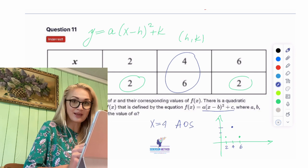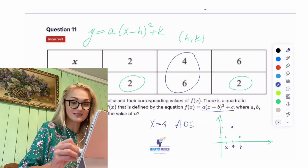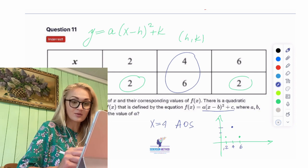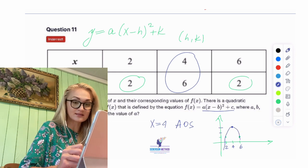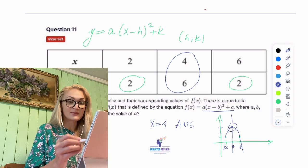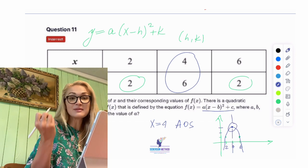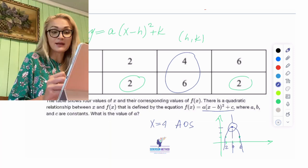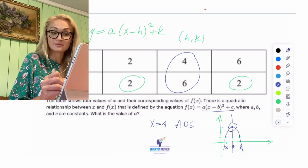So we can just connect the dots, and we see that this right here is actually my vertex. So I immediately know what my b and my c are — how convenient.